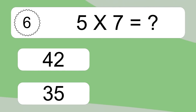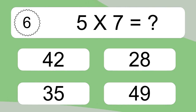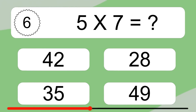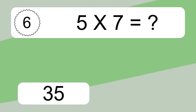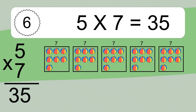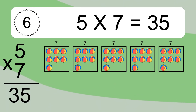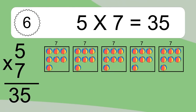5 times 7 equals what? 5 times 7 equals 35. We have 5 boxes and each box has 7 colorful balls inside. If you count all the balls in all the boxes together, you will have 5 times 7 balls. This equals 35 balls.